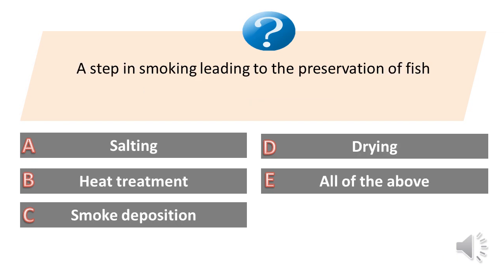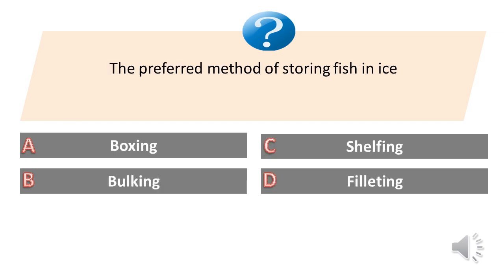A step in smoking leading to the preservation of fish. A. Salting. B. Heat treatment. C. Smoke deposition. D. Drying. E. All of the above. Answer is E. All of the above.